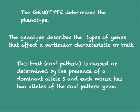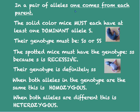In this case, coat pattern is caused or determined by the presence of a dominant allele S. Each mouse has two alleles of the coat pattern gene — in a pair of alleles, one comes from each parent. The solid color mice must each have at least one dominant allele, big S. Their genotype must be big S little s, or two big S's.